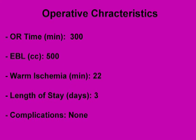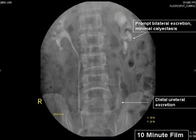At one month, the stent was removed in the office. Six weeks after that, which is almost three months after the initial operation, an IVP was performed. At the 10-minute mark, there was prompt excretion bilaterally. There was minimal caliectasis, and there was excellent drainage down to the distal ureter. The patient was pain-free.